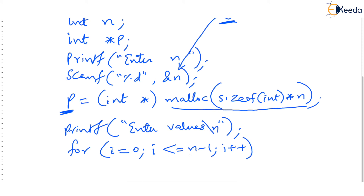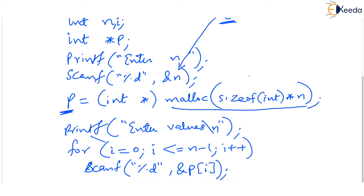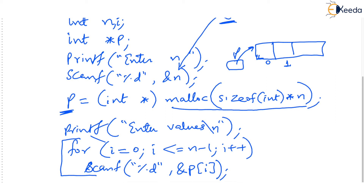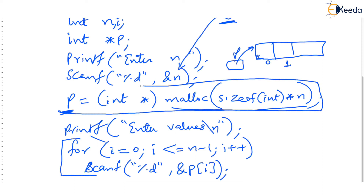Now you want to input these values. Write a for loop where i goes from 0 to n minus 1, i plus plus. This loop will clearly go from 0 to 4 because n is 5. Inside the loop we write scanf with %d and &p[i]. p is pointing to the base address of the array; when i is 0 we are reading p[0]; when i is 1 we are reading p[1], and so on. This is how you store values in a dynamically allocated array. To print it, you just write a for loop with printf %d and p[i].